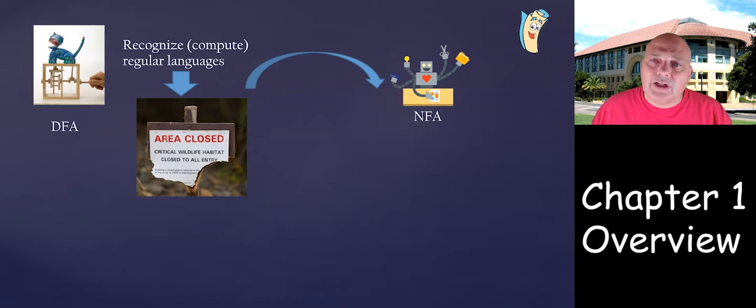In the process of proving these closure properties, we will encounter and introduce a new model of computation similar to DFA, but stronger. This will be NFAs, which are non-deterministic finite automata. These models are similar to DFA but are allowed to make verified guesses. This will be our first encounter with non-determinism.